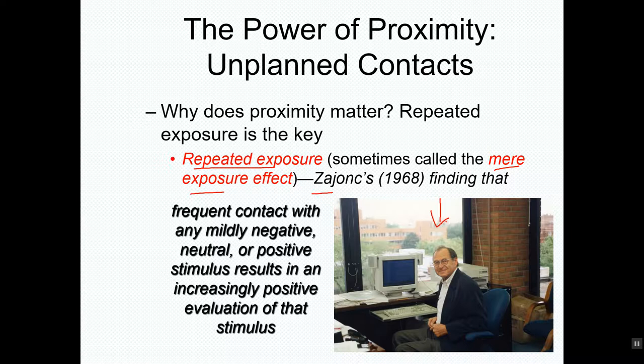He's so famous that they say you can't get out of a social psychology course without knowing how to pronounce his last name. It's Zajonc — it rhymes with science. So not 'John Sink' or something like that — it's Zajonc. He developed a theory of repeated exposure where he said that frequent contacts with any mildly negative, definitely neutral, or positive stimulus results in increasingly positive evaluations of that stimulus.